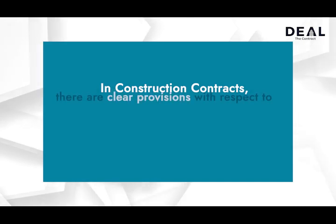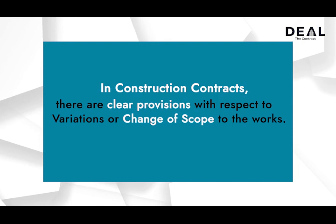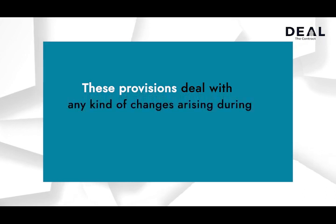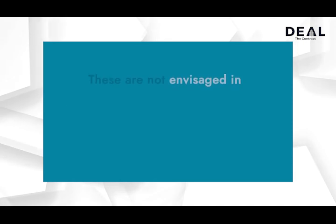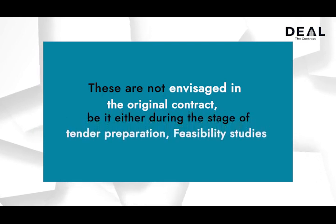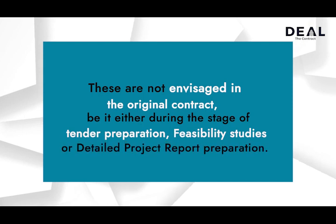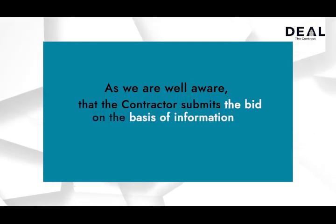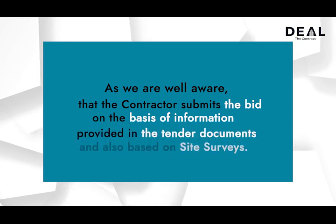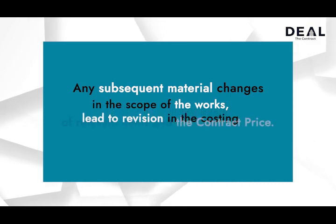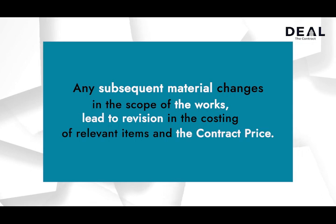In construction contracts there are clear provisions with respect to variations or change of scope to the works. These provisions deal with any kind of changes arising during the currency of the contract. These are not envisaged in the original contract, be it either during the stage of tender preparation, feasibility study stage, or detailed project report preparation stage. Any subsequent material changes in the scope of the works lead to revision in the costing of relevant items and the contract price.